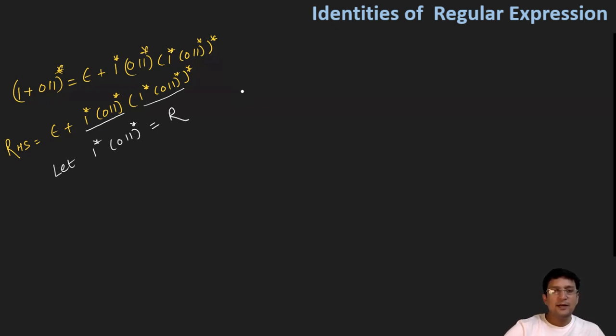We can rewrite the right-hand side as epsilon plus r and r star. This means epsilon plus r positive closure. In the positive closure, if I include epsilon also, this becomes r closure.